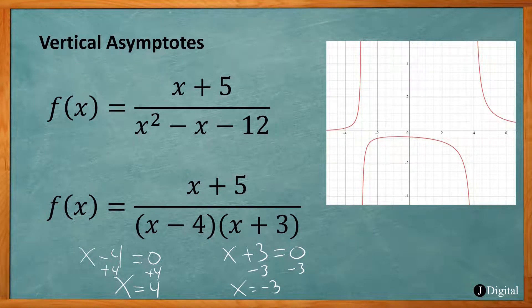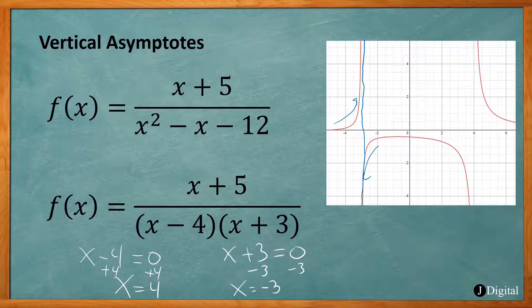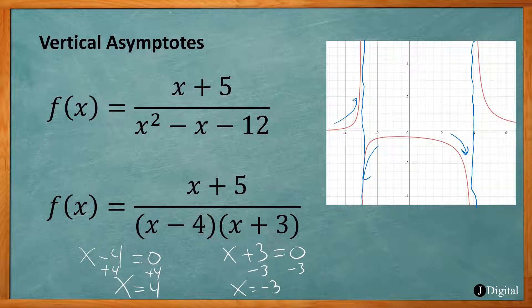So we'll have vertical asymptotes at x = 4 and x = -3. We can see at x = -3, we have this vertical asymptote — from each side it gets close to the line but never crosses. We also have our other vertical asymptote at x = 4; from both sides it's going to get close to that line and never cross it.